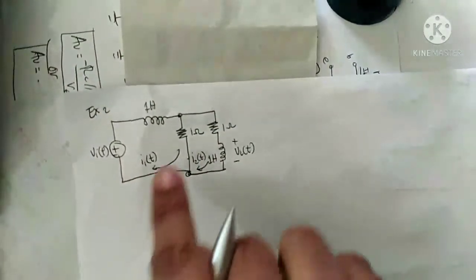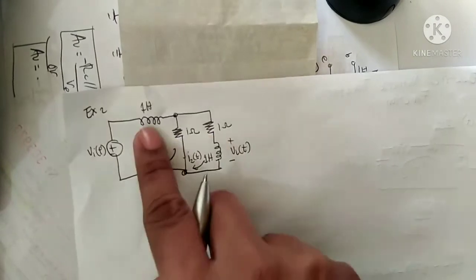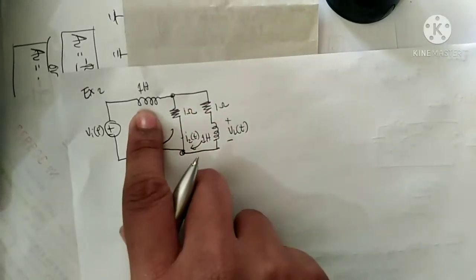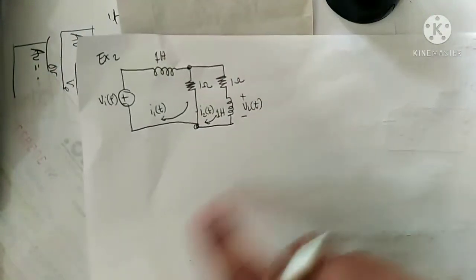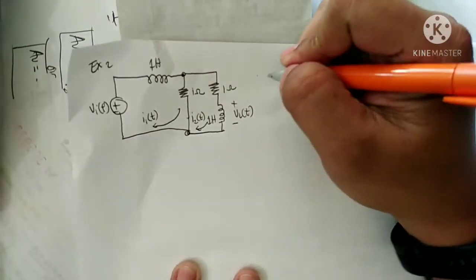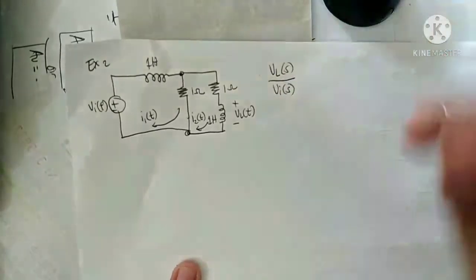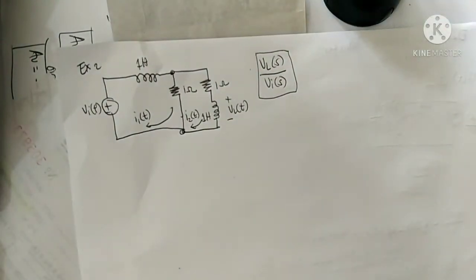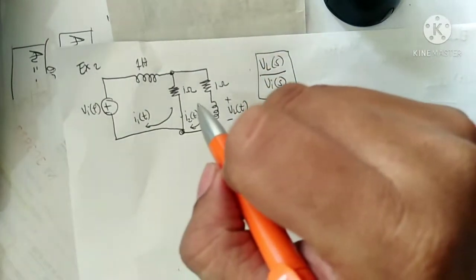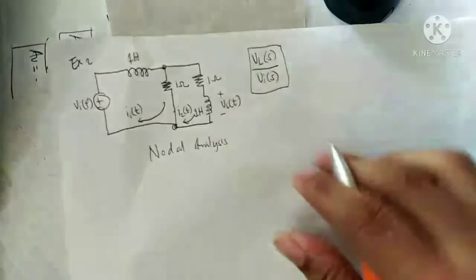Let's have another example circuit. There are two resistors; an inductor is in series with a 1-ohm resistor, and then connected in series with a 1-henry inductor. We want to find the transfer function. Since the output is VL as a function of t — or VL(S) divided by Vi(S) — we can use KVL or, better, nodal analysis. Let's use KVL.